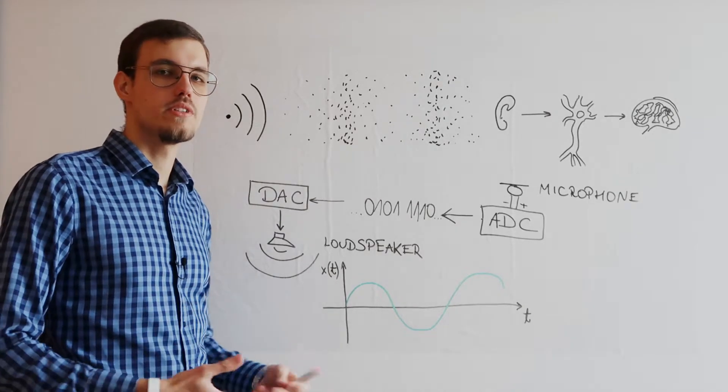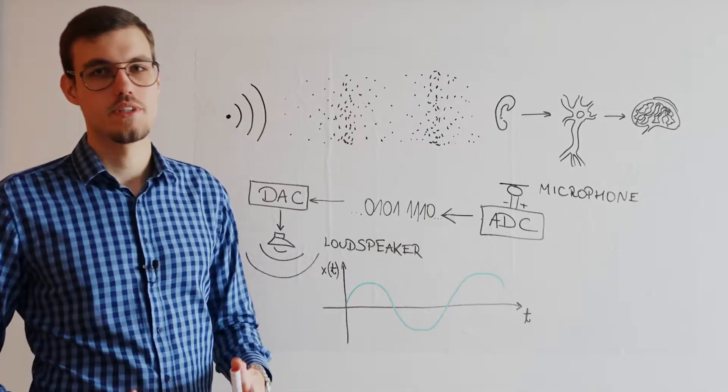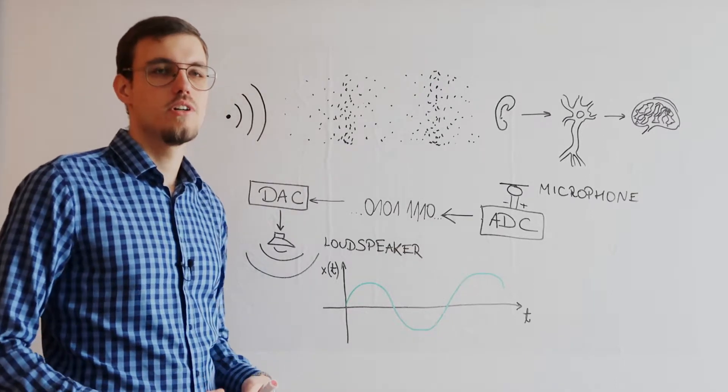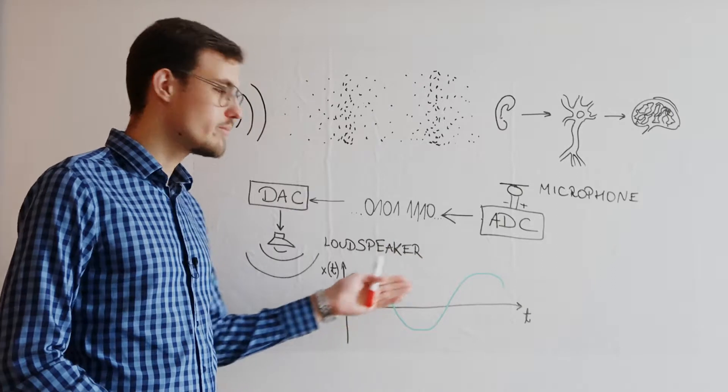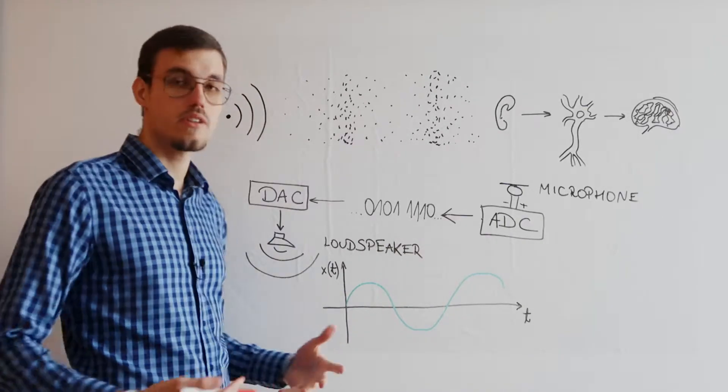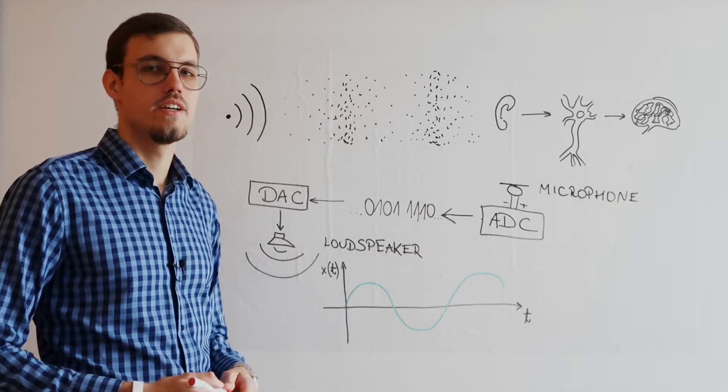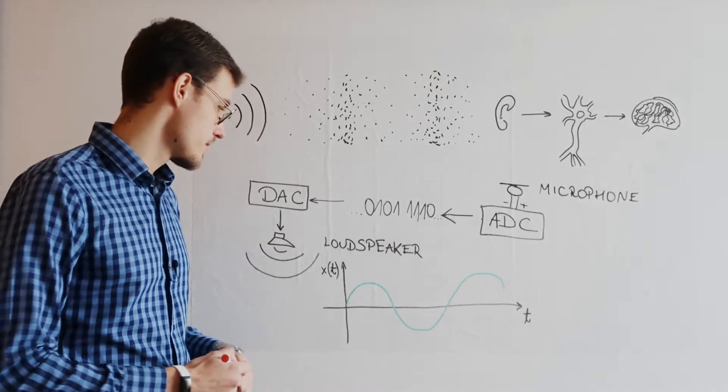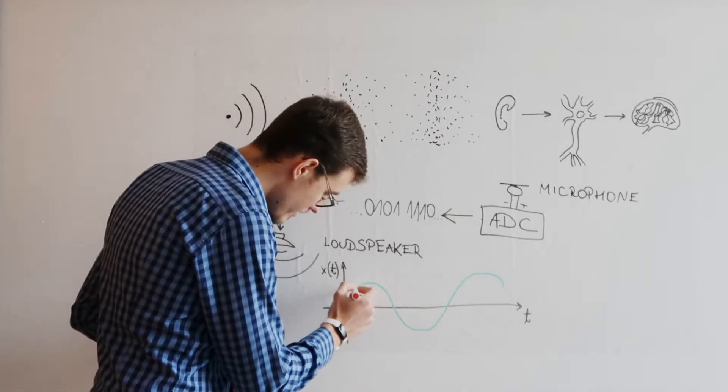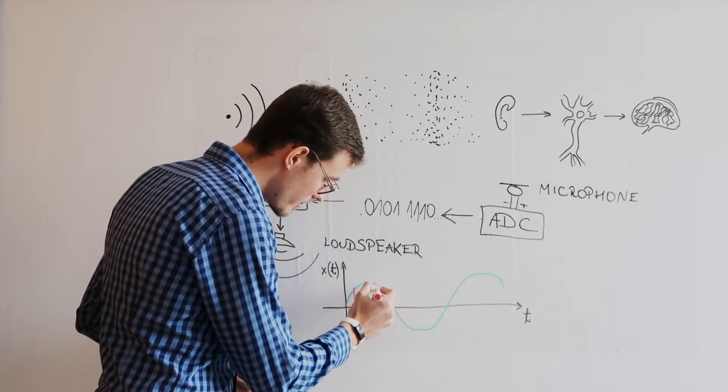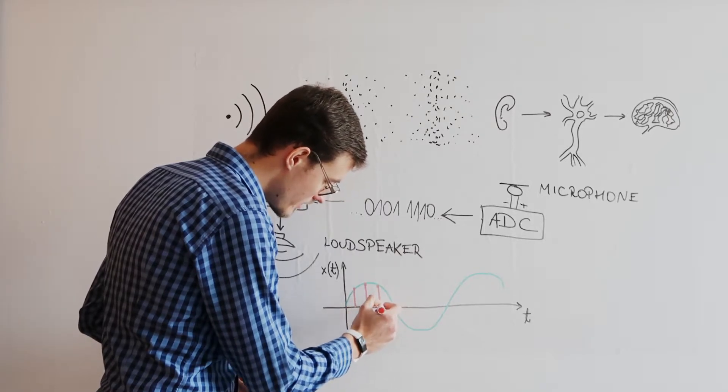Such digital numbers are called samples because we are only able to store value of this wave, this amplitude, at particular points in time and the process of recording such samples is called sampling. And sampling occurs at regular intervals in time.